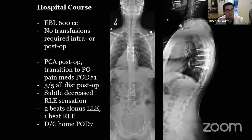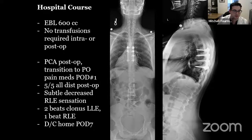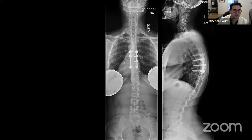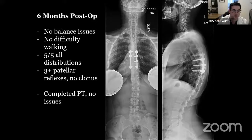Finishing the patient's course: EBL was 600 mL, no transfusions required intraoperatively or post-operatively. She was off a PCA by post-op day one. She regained strength to five out of five post-op immediately after surgery. Still some right lower extremity decreased sensation and a couple beats of clonus. She was home seven days after surgery, mostly due to oral pain control. At six months post-op, she has no balance issues, her gait is normalized, no assistive device, with only a little patellar hyperreflexia as residual deficit. She's completed physical therapy and is following up as needed.